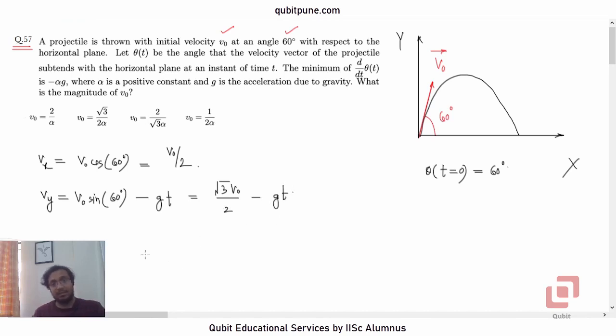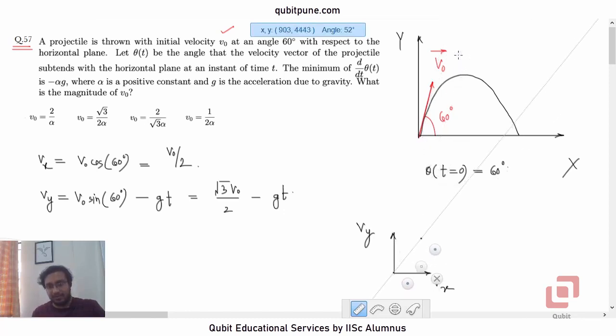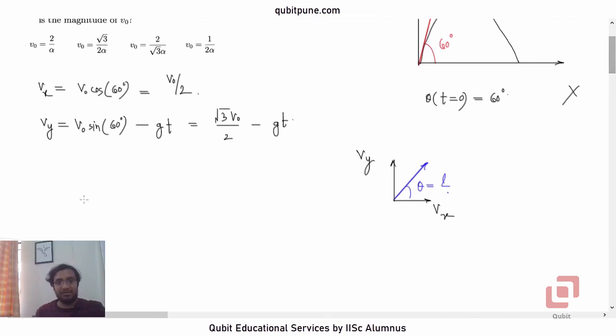Now, at any instant, if this is our velocity being resolved into two of its components, the horizontal and the vertical, can we determine this theta? Yes. How to determine that angle theta? Using the components. So, we can say that tan theta is vy upon vx.